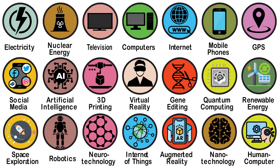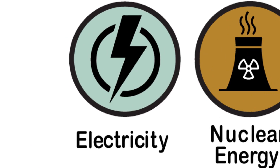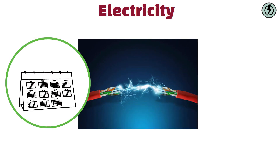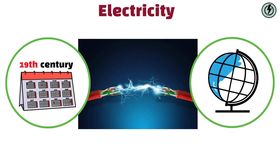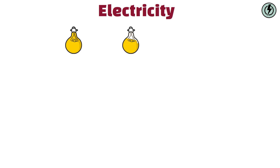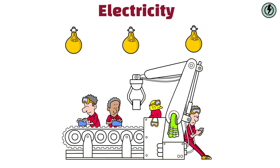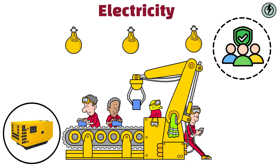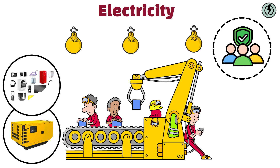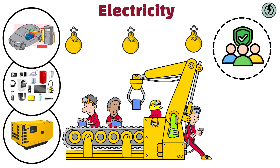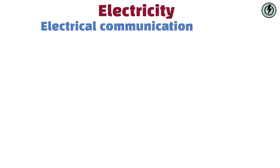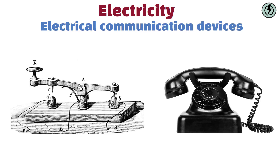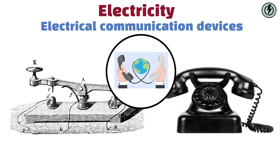Every modern revolutionary technology explained. The harnessing of electricity in the late 19th century transformed the world in countless ways. Electric lighting extended the workday and improved public safety. Electric motors powered factories, household appliances, and transportation systems. The development of electrical communication devices, such as the telegraph and telephone, revolutionized long-distance communication.